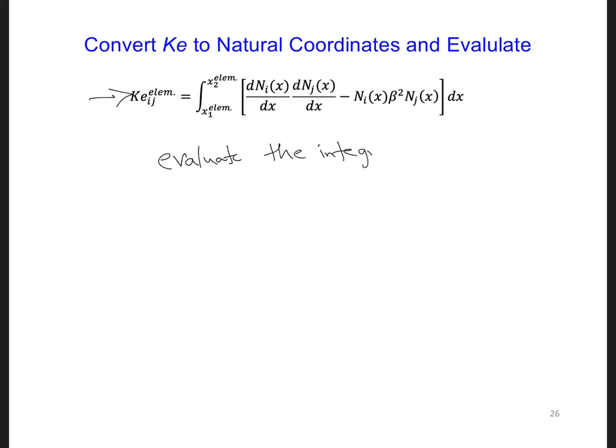So evaluate the integrals for the 4 ke coefficients. Since ke is a 2 by 2 matrix, i goes from 1 to 2, and j also goes from 1 to 2. And also remember the limits on the integrals will go from minus 1 to 1, since you are now going to be in natural coordinates psi, where the master element goes from minus 1 to 1.